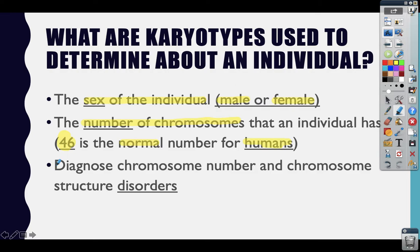The third thing we can figure out is whether the person has number disorders or structure disorders. For our purposes, we are only going to worry about diagnosing chromosome number disorders from karyotypes. We are not going to try to figure out if there's a structure disorder.